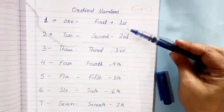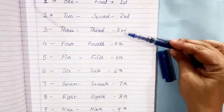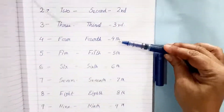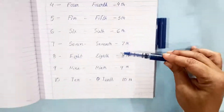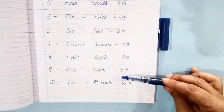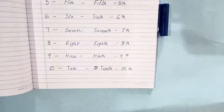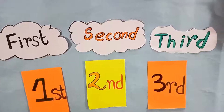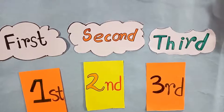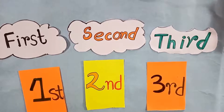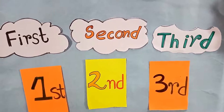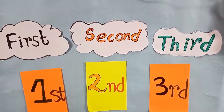First, second, third, fourth, fifth, sixth, seventh, eighth, ninth, tenth. So children, now I will show you the ordinal number.